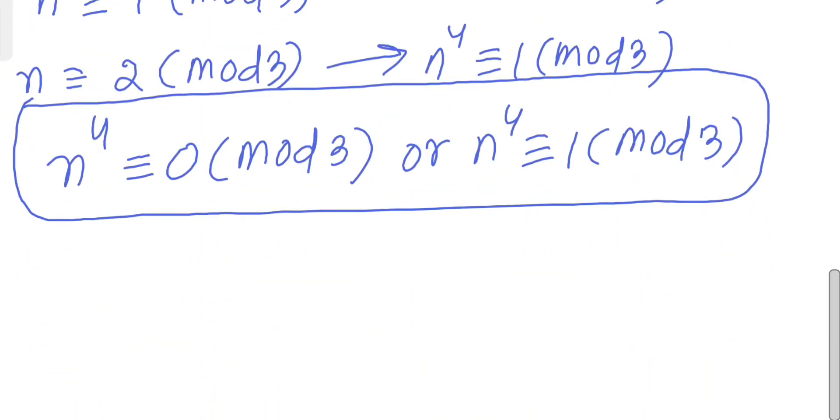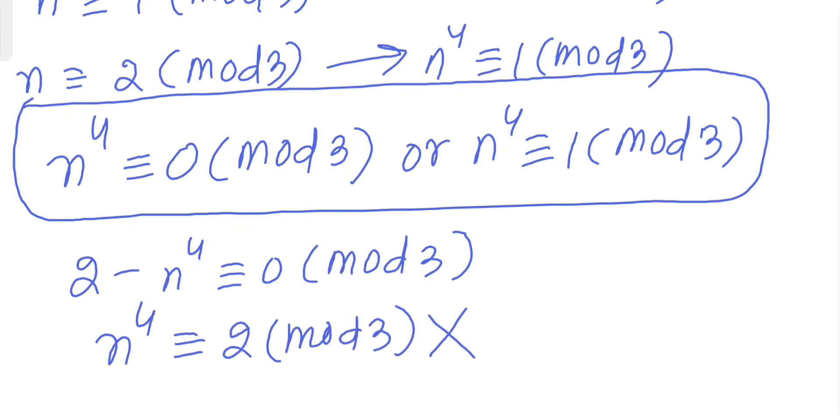This gives us that 2 - n^4 ≡ 0 (mod 3), and if you simplify this, this gives us n^4 ≡ 2 (mod 3), which is impossible. Hence this equation has no solution. Using modular arithmetic we got one contradiction and found no solution for this one.